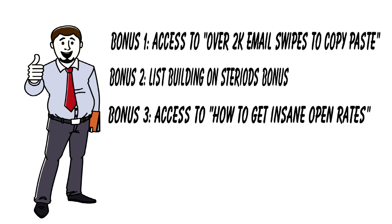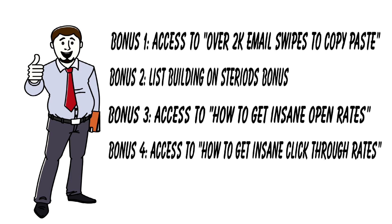Bonus number three is how to get insane open rates. It tells you how to get your emails opened after you send them out — how to get compelling from-lines or subject headers to get your emails opened. It's a very valued technique. And bonus number four is how to get insane click rates. It doesn't do any good to get them opened if people don't click the link inside the email. Once they open it, you want a compelling way to get them to click your link so you can get them to your squeeze page, opt-in page, or landing page.